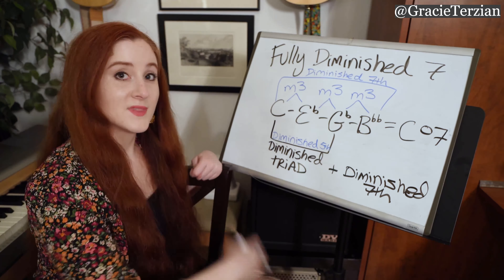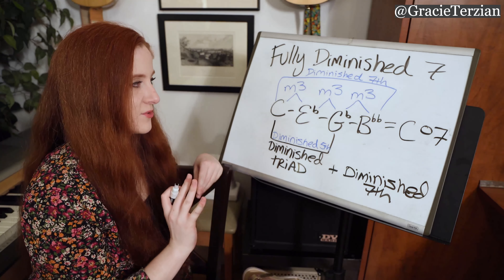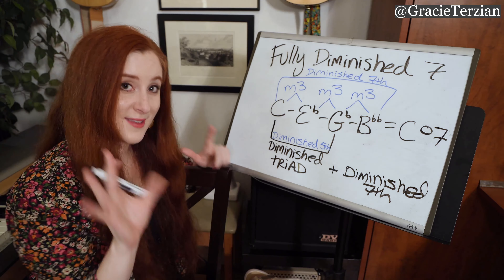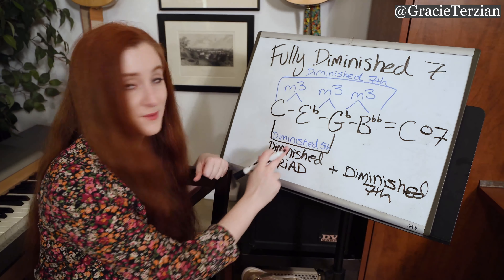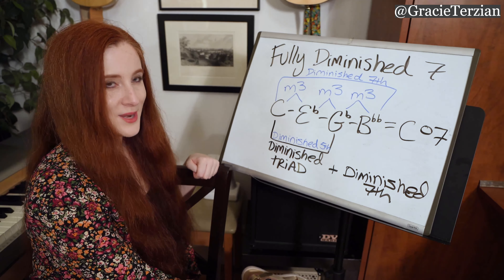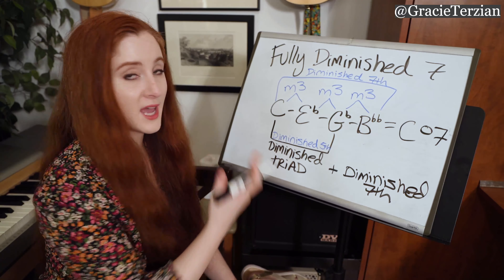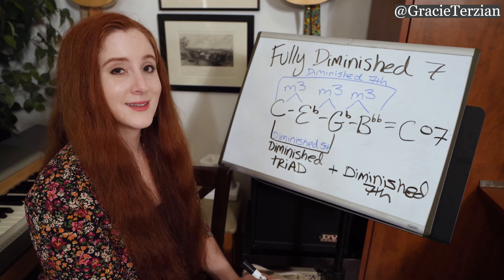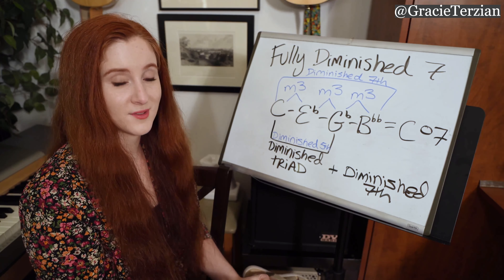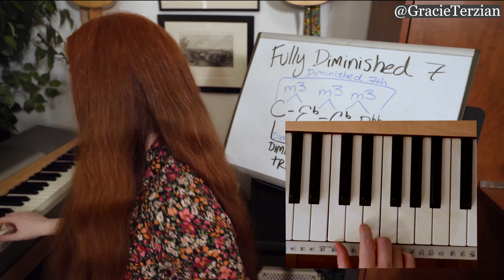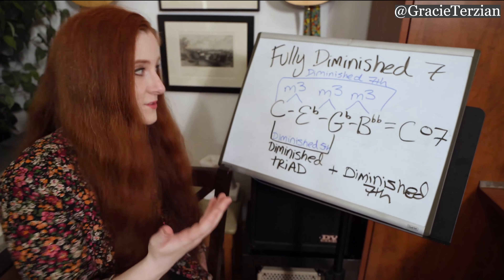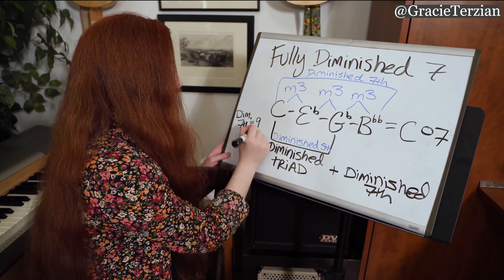Let's review the number of half steps. Diminished fifth: six half steps. Minor third: three half steps. What about a diminished seventh? A minor seventh had ten half steps, so a diminished seventh is one less — nine half steps. From C to B double flat: 1, 2, 3, 4, 5, 6, 7, 8, 9 — nine half steps. So a diminished seventh has nine half steps.